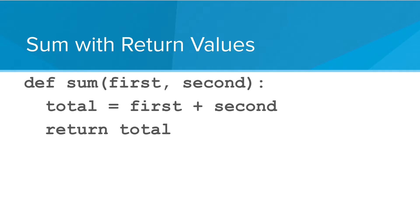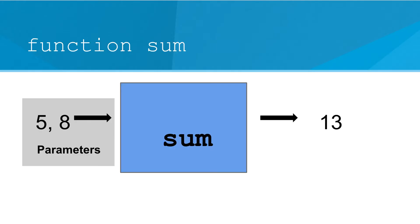This function is taking two numbers, calculates a new variable called total, then returns that value back to the caller. We can look at this a different way. Sum is the function — it's like a machine. Something comes into the function and something goes out.